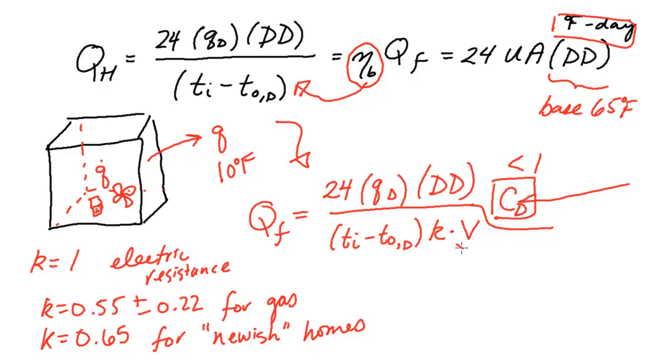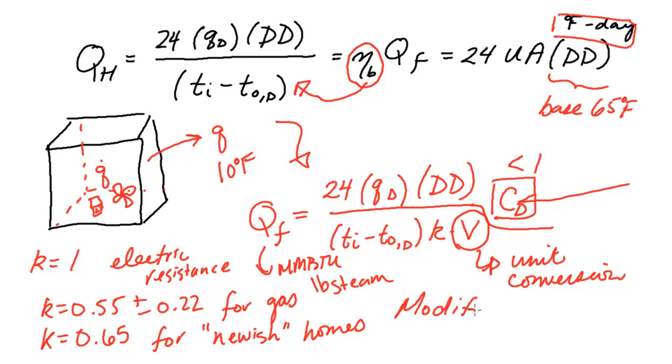And the last thing is all this V here is for is this is a unit conversion factor. And so this will be whatever it needs to be to make your fuel units come out. So if your fuel was in MMBTU, you would get a different one. If it was in pounds of steam, you would get a different V. But all this is this really is not adjusting the numerical value. It's just making sure that the units come out right. This whole method here, this was called the modified degree day method.